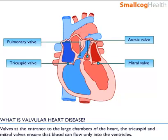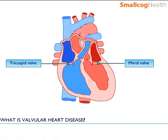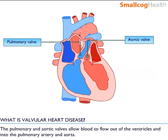Valves at the entrance to the large chambers of the heart — the tricuspid and mitral valves — ensure that blood can flow only into the ventricles. The pulmonary and aortic valves allow blood to flow out of the ventricles and into the pulmonary artery and aorta.